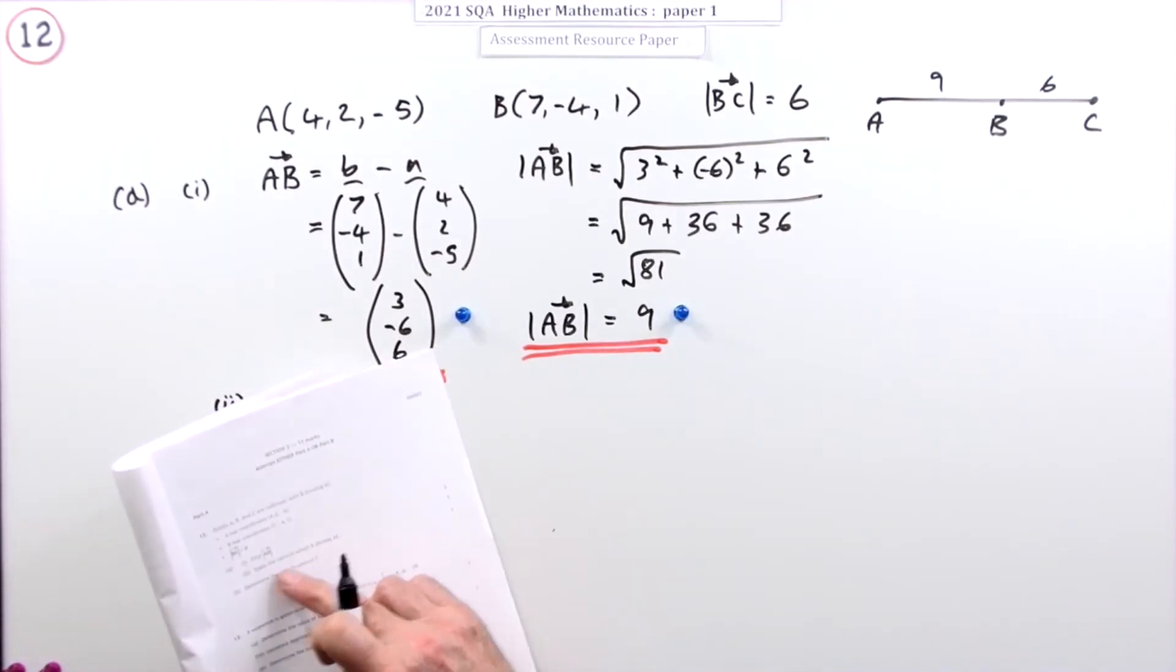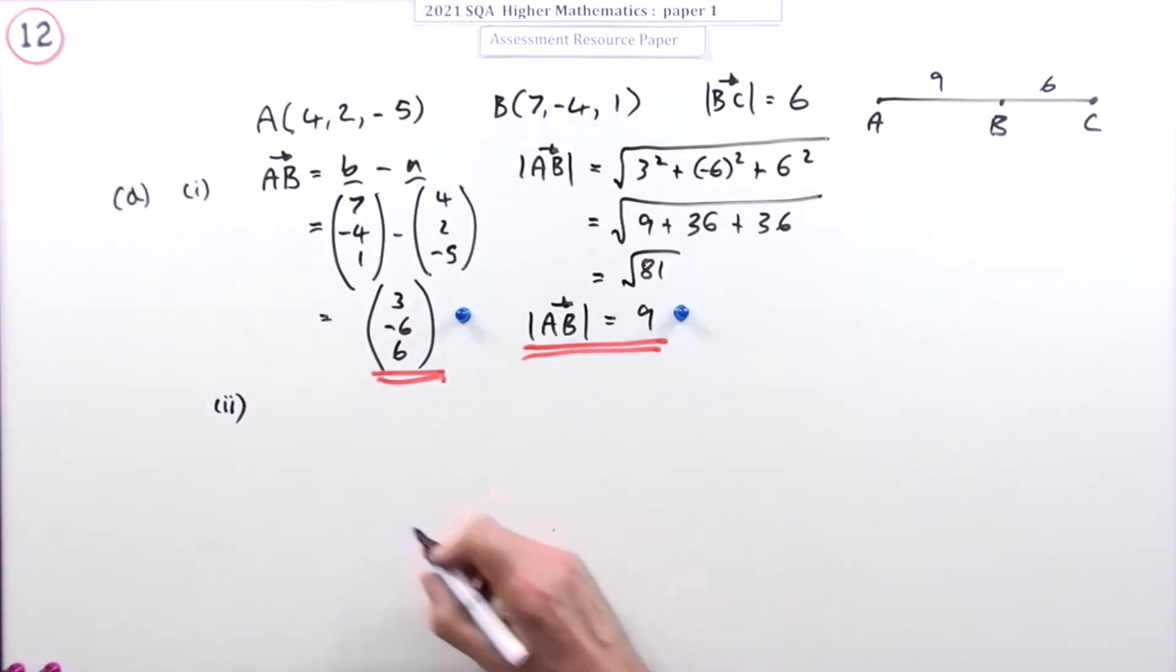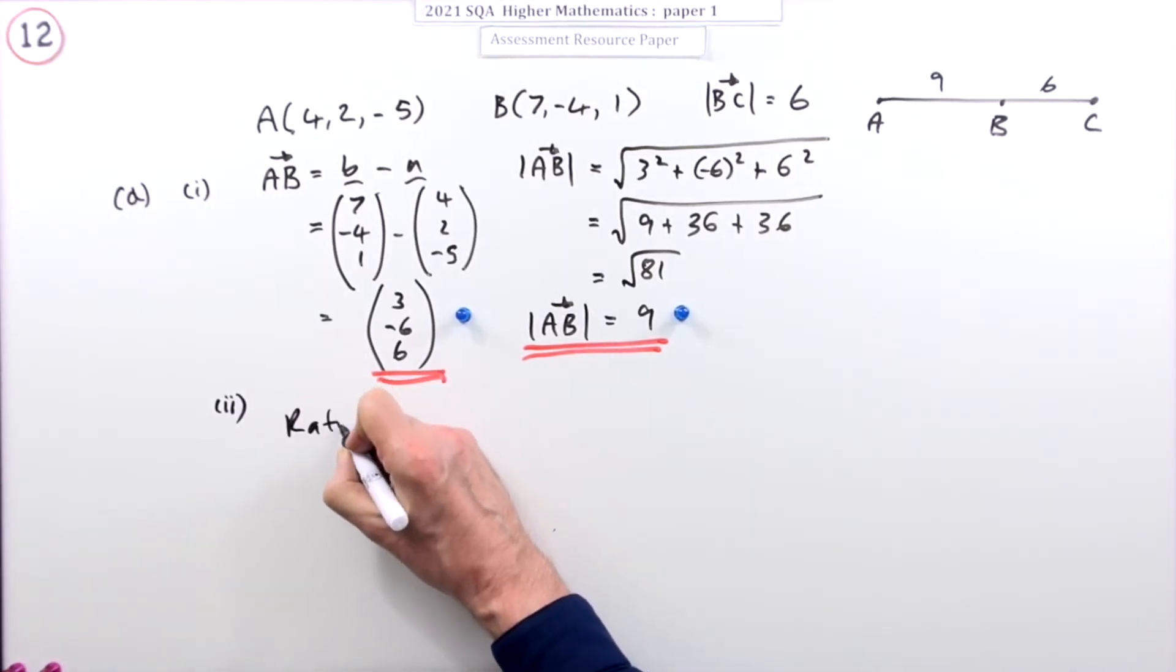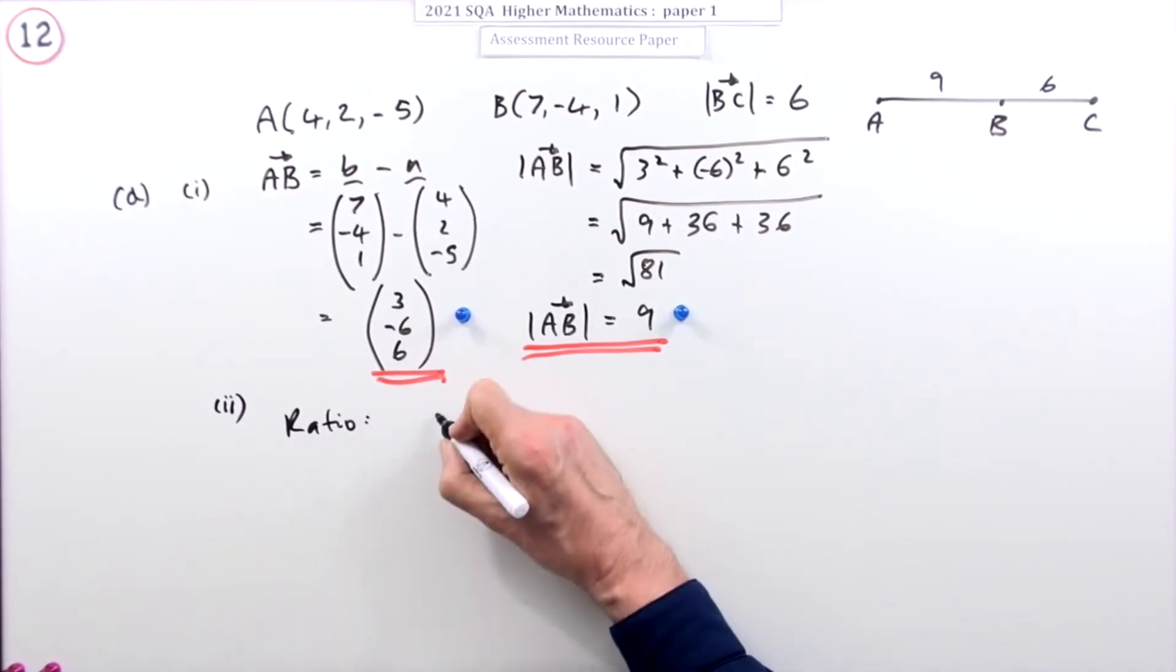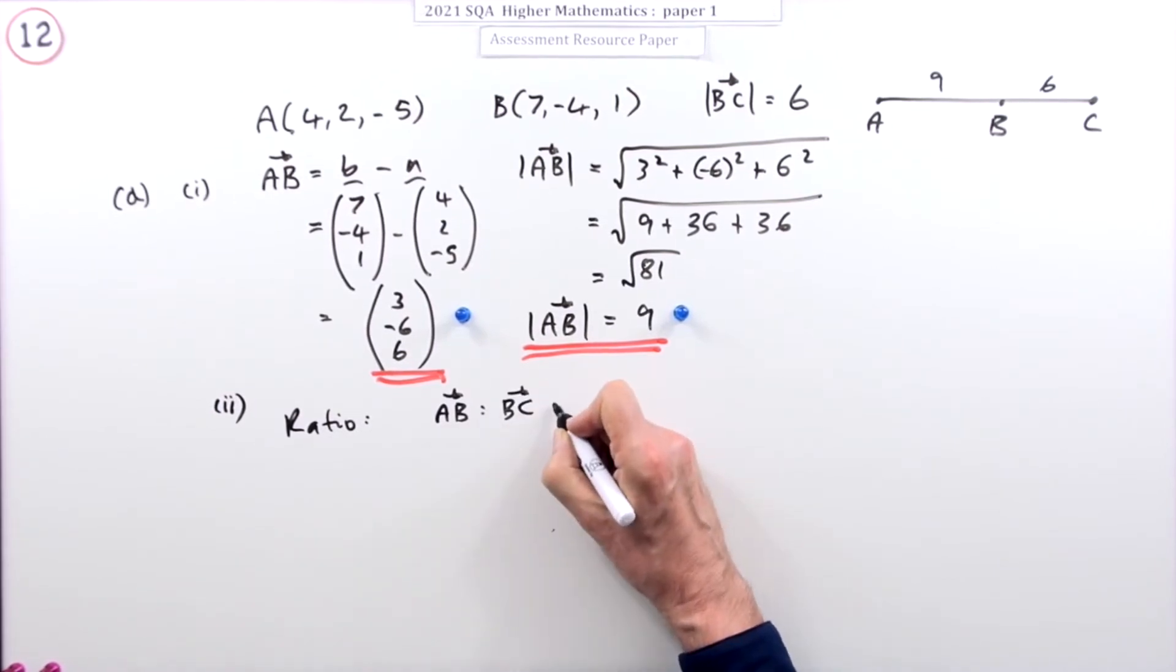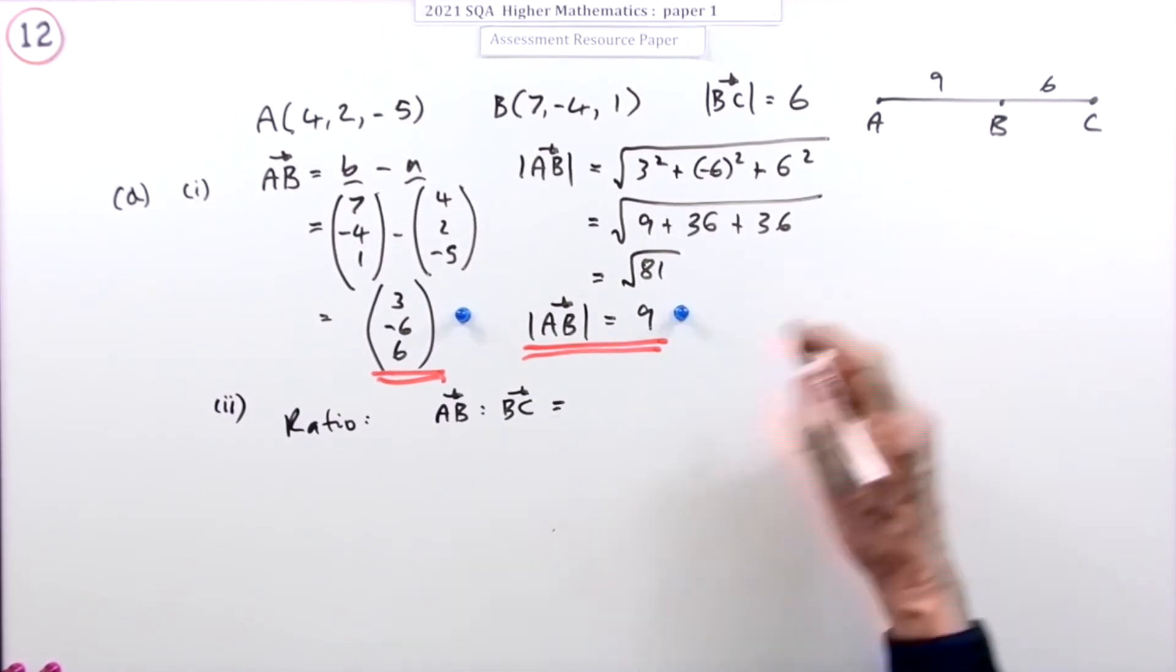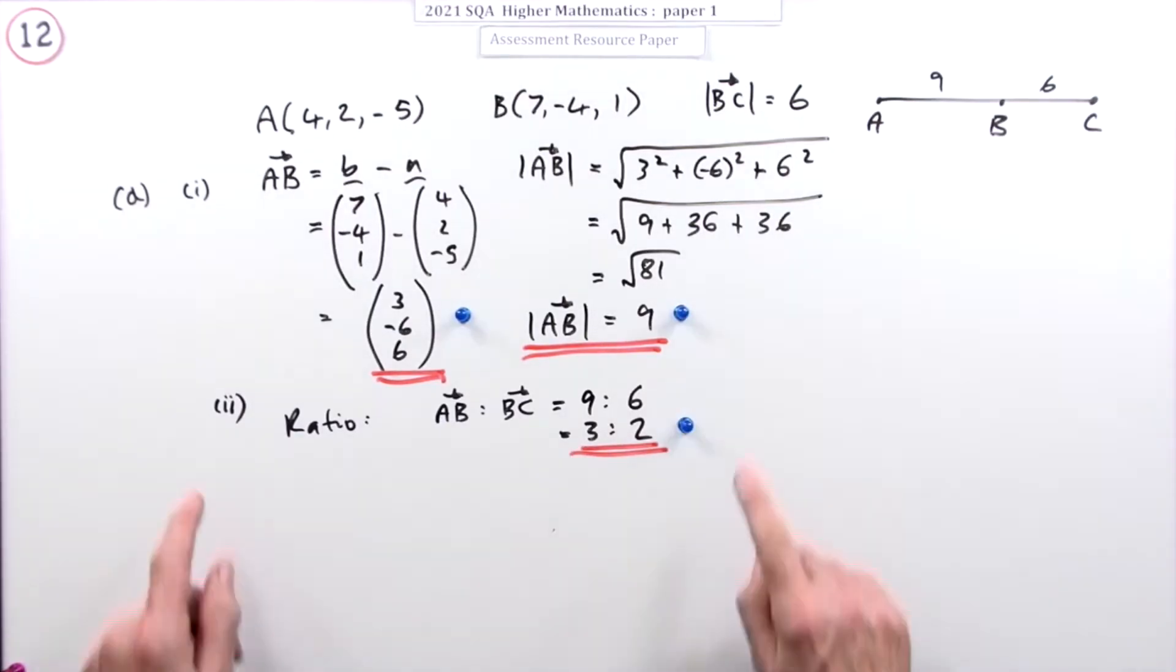Now the second part just said state the ratio in which B divides AC. Well, the ratio in which it divides it, so I should write down AB to BC. AB to BC is going to be, well it's 9 to 6. I'll put that down first of all, but you have to simplify that, so that'll be 3 to 2. So that was part A.